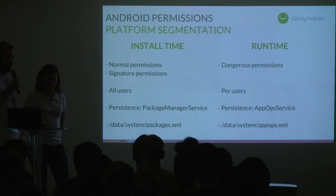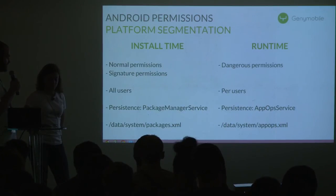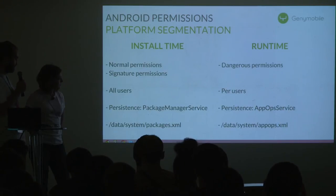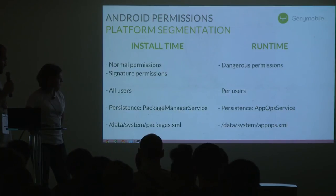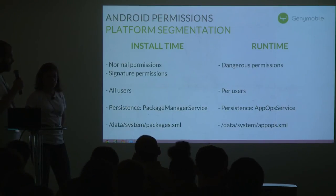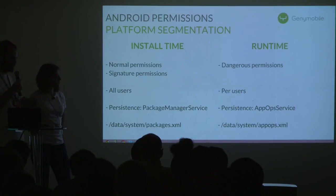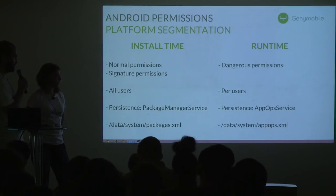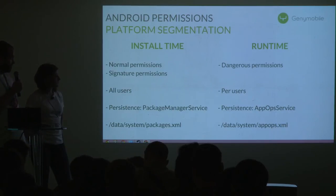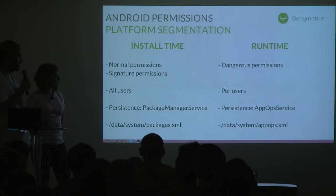From the inside, the platform segments its own permissions into two kinds: install time and runtime. Regarding install time, all normal and signature permissions are granted at install for all user sessions. The persistence is managed by the PackageManagerService. Regarding runtime permissions — the dangerous ones — those are granted per user, so an application installed for two users might not have the same permission state. Persistence is managed by the AppOps service in data/system/appops.xml. Lollipop essentially uses the install time procedure, so covering Marshmallow permissions also covers Lollipop permissions.